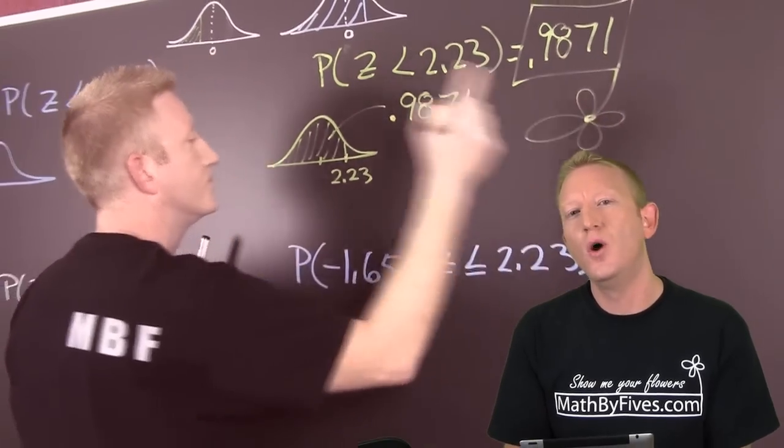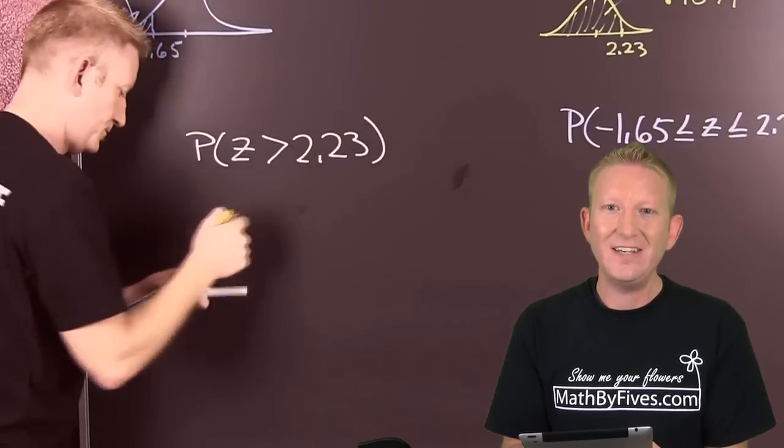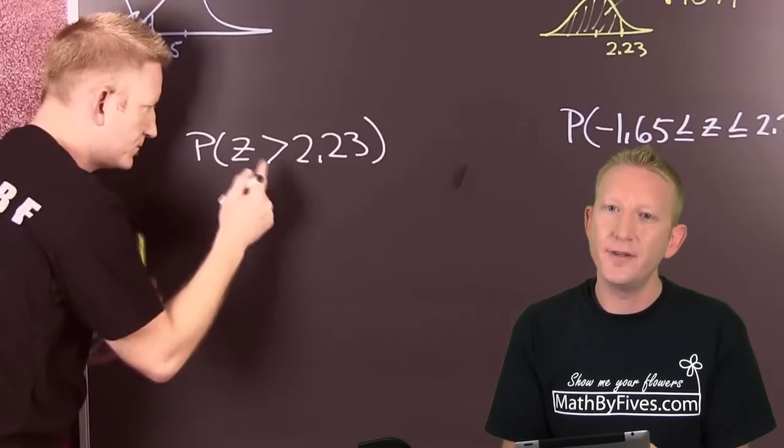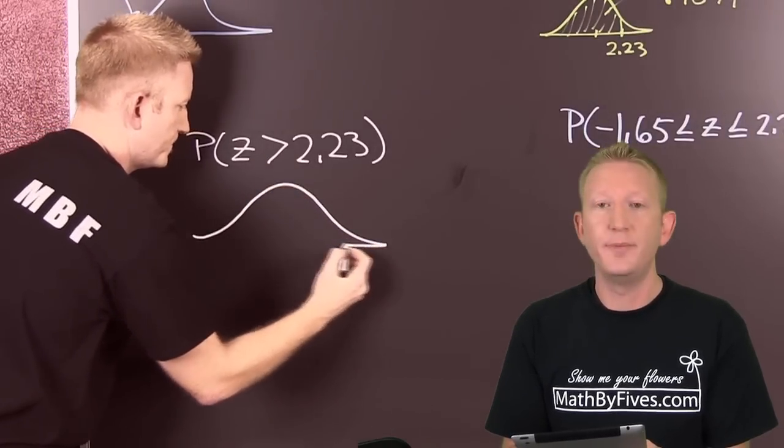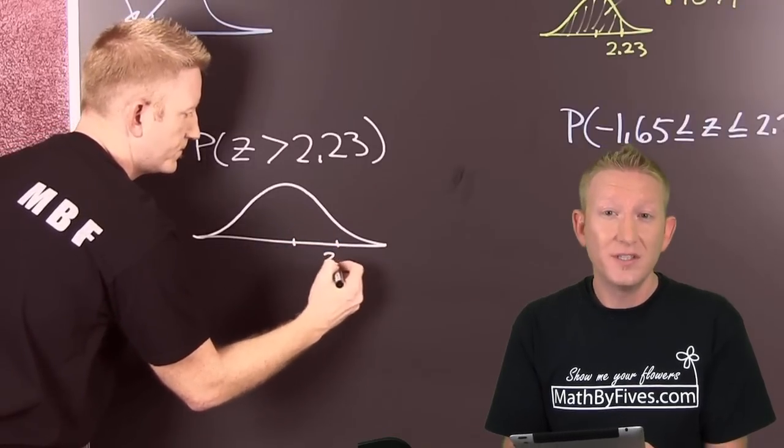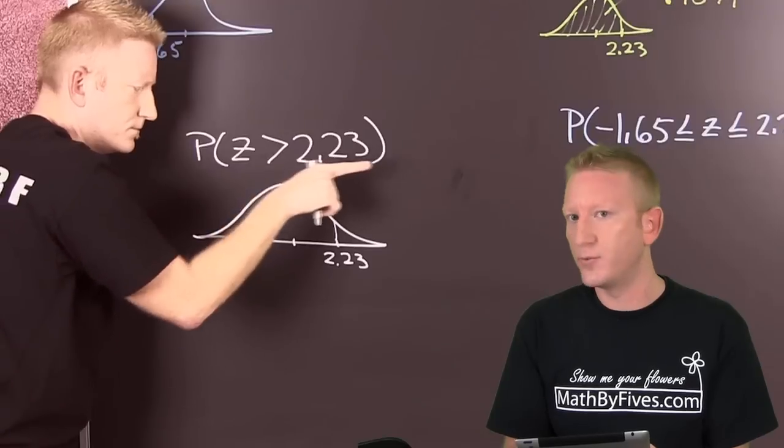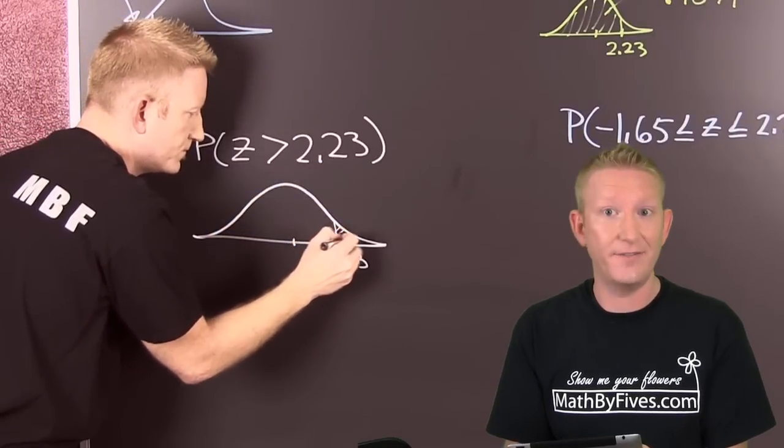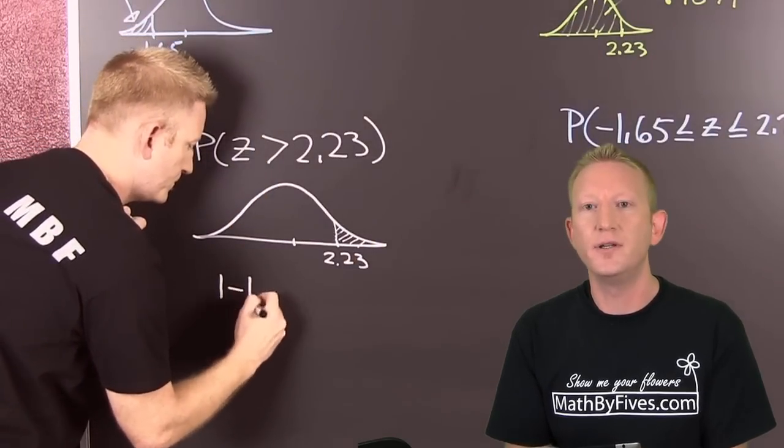But what if we wanted to know the probability in standard deviations if the value was greater than 2.23? Well, here we see that the probability under the normal curve has to add up to be 1. So since we're using left side intervals, we need to find the area to the right. But we know the area to the left and the total area is 1.